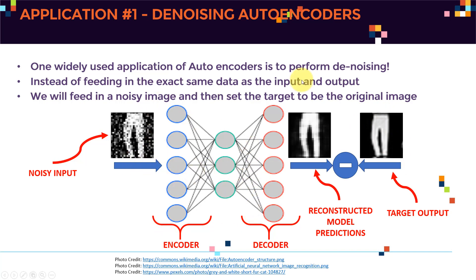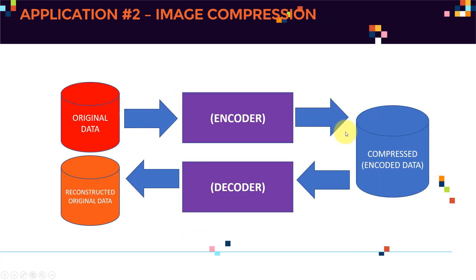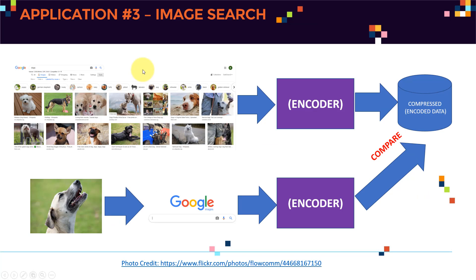The second application is image compression — you encode the original data into a compressed version and decode it back to reconstruct the original. The third application is image search — by encoding all images and comparing encoded versions, you can efficiently locate images. The fourth application is anomaly detection by training on proper transactions only.